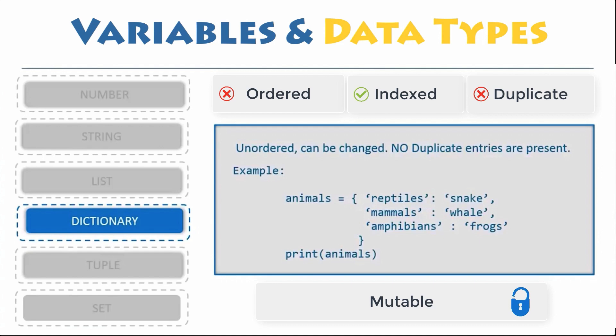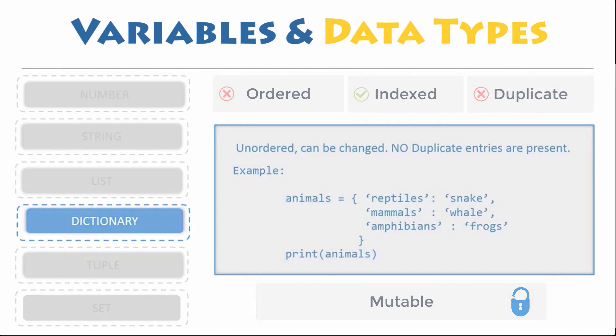Each key value pair is separated by a colon, whereas each entry is separated by a comma. Dictionary keys are case sensitive. Same name but different cases of key will be treated distinctly.